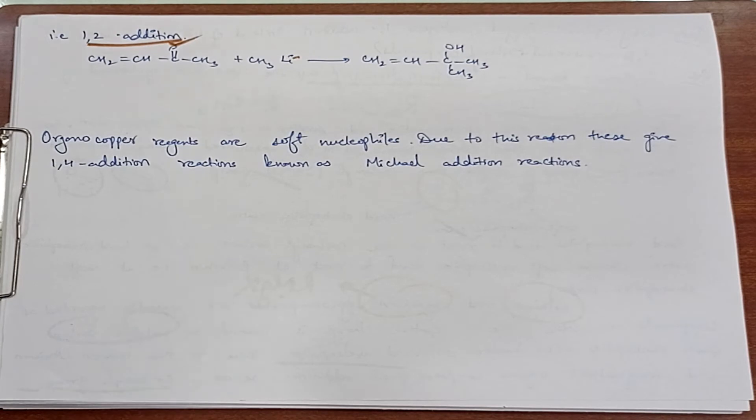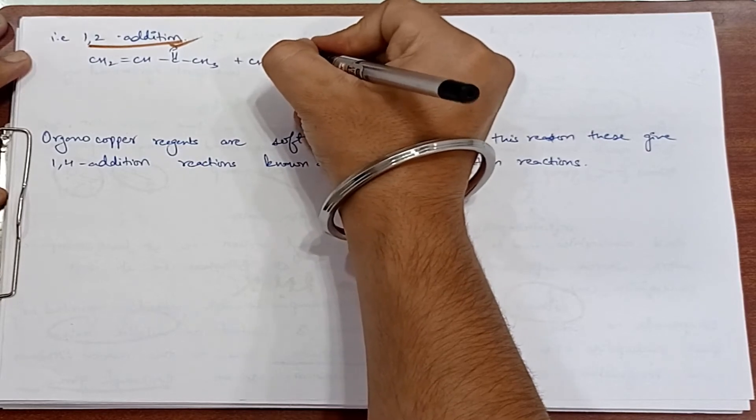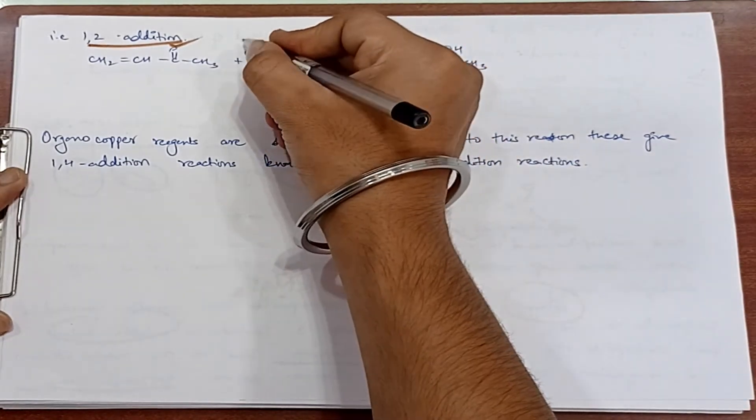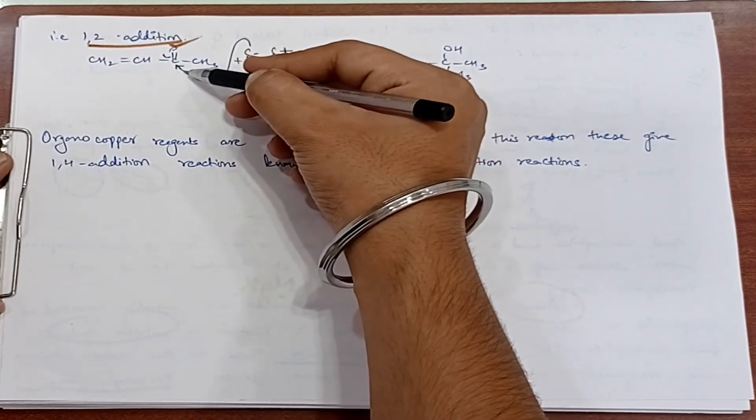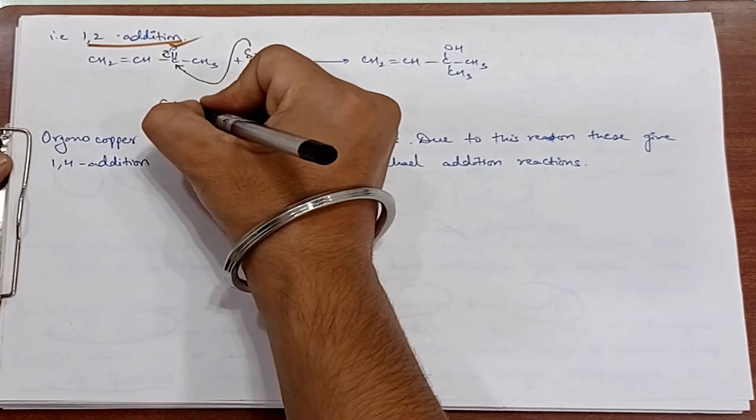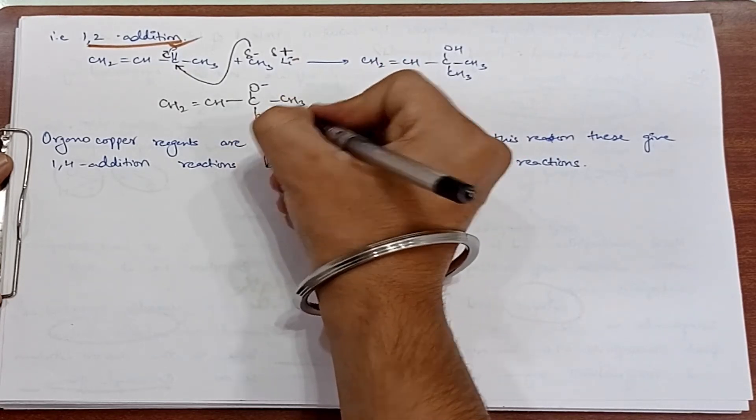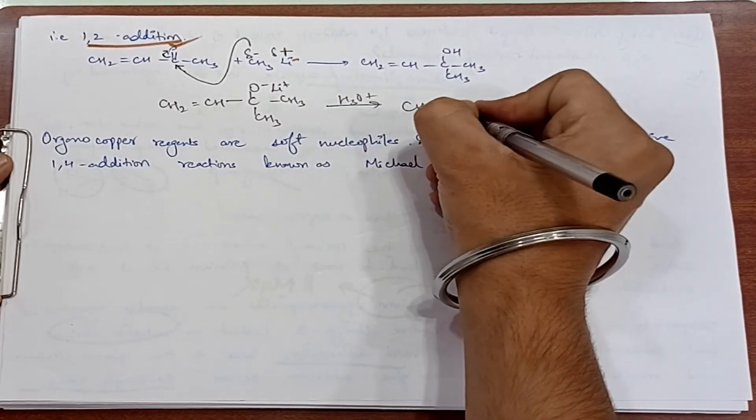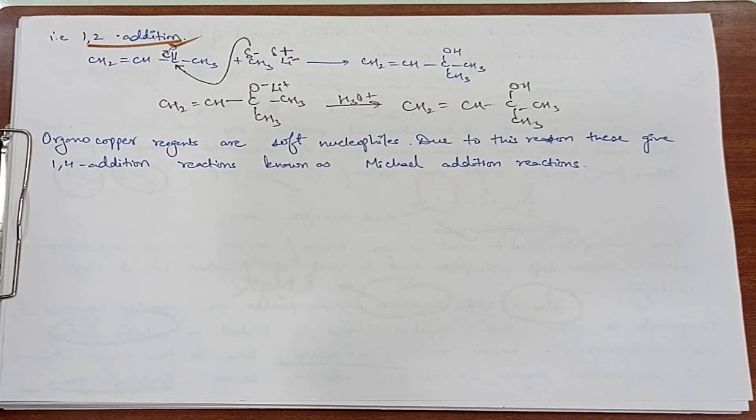The mechanism shows the carbonyl with positive charge on carbon and negative charge. The electrons transfer, giving CH2-CH-CO-CH3. Here lithium ion works. We have this compound where lithium is replaced with hydrogen.